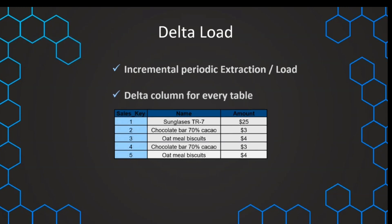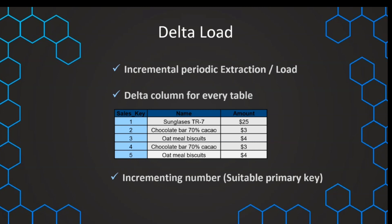Sometimes if we don't have a timestamp available, we can look at other possibilities — other columns we can use to identify new data. This could alternatively be something like a primary key, but we have difficulties if it's just a natural key that is maybe a random set of numbers. If we want to use a primary key, we need to make sure that it's an incremental number — something we can really use to identify what is a new row that has not been loaded before.